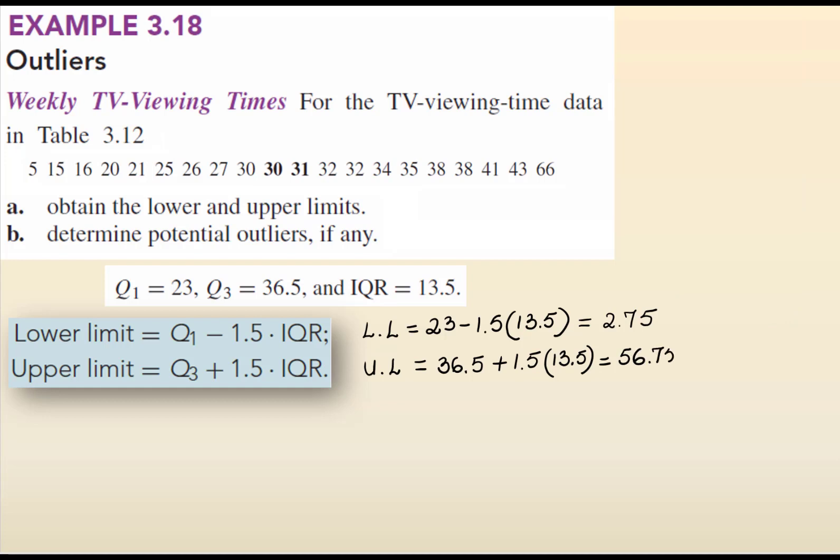Now, the upper limit is 56.75. The maximum is 66, which means that the maximum is greater than the upper limit, so it's outside of the range of the upper limit. And that fact makes 66 a potential outlier.